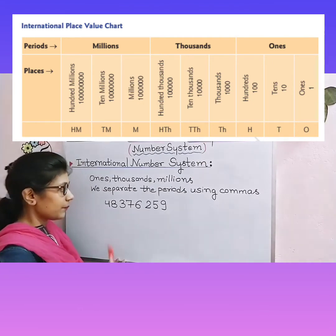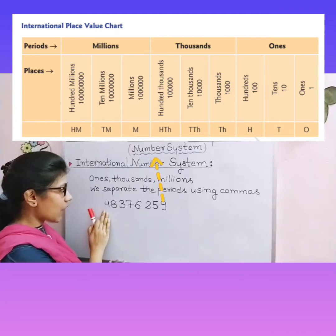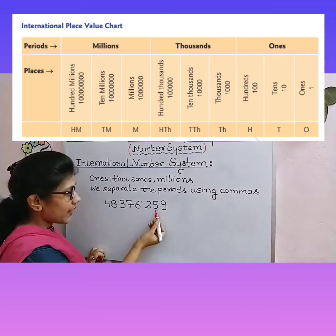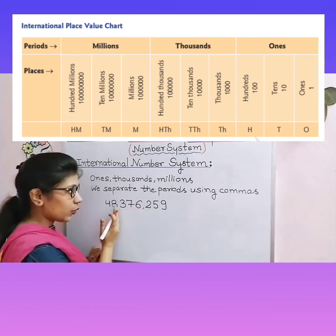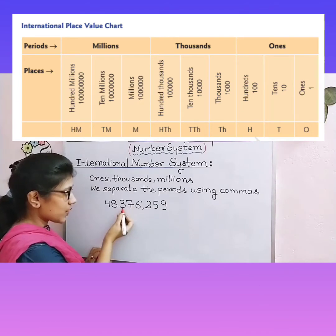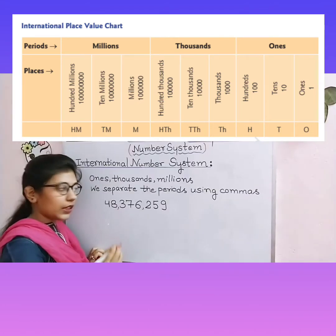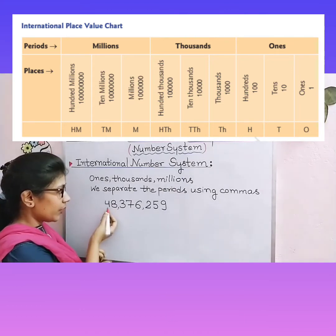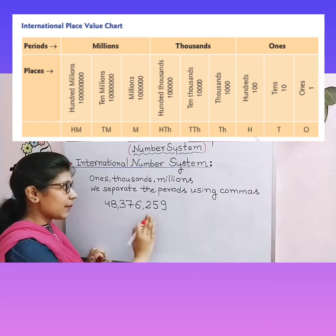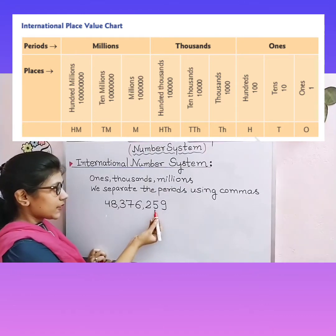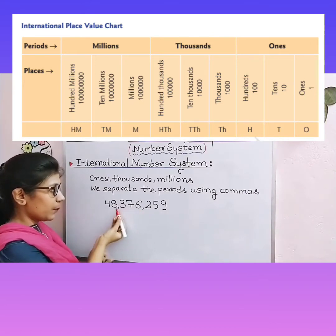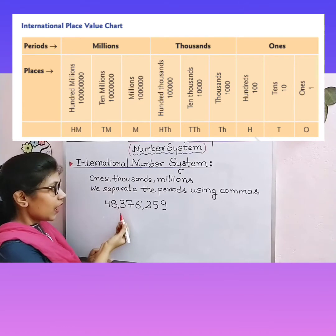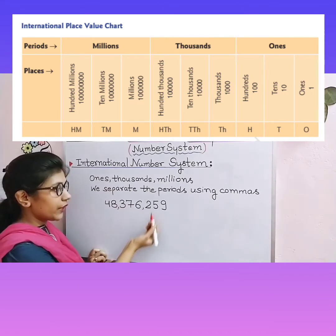We will separate the periods using commas. Take this number and place it in the International Place Value Chart according to commas: ones, tens, hundreds — hundred thousand, ten thousand — thousand — million, ten million. We will read it or write the number name. The number is 48,376,250,000.